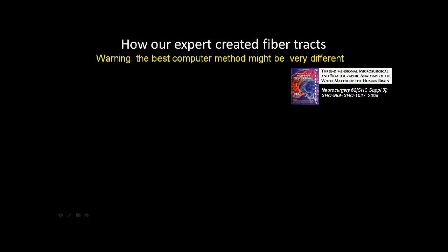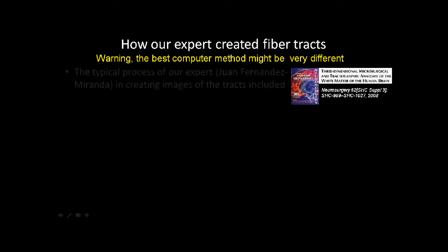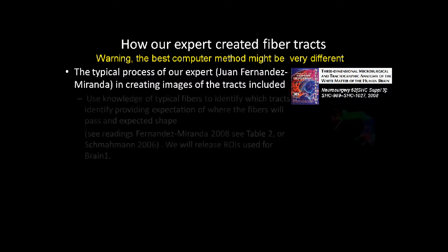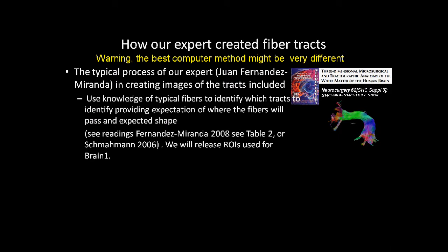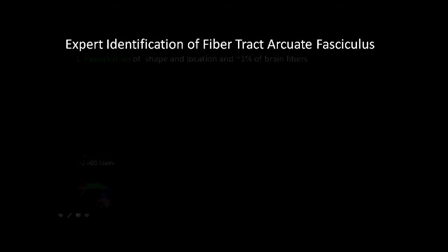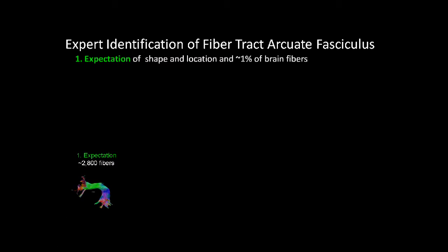It's useful to know how our expert created the fiber tracks that are the basis for this competition. The typical process: our expert, Juan Fernandez Miranda, created these fibers by first using his knowledge of what the fiber tracks would look like. That's based on dissection knowledge where he has dissected cadaver brains, and we have an expectation that it should look as illustrated by this shape. Then, interactively, he places balls as to where the fibers are expected to go and where they should not be. The first thing is the expectation that we would expect about 1% of the brain fibers to be the arcuate fasciculus — 2,800 fibers of our set.